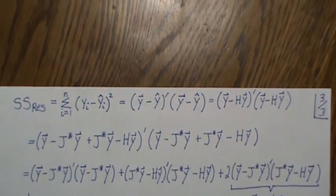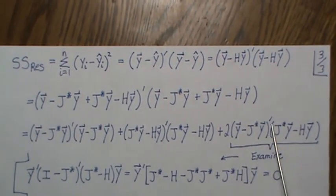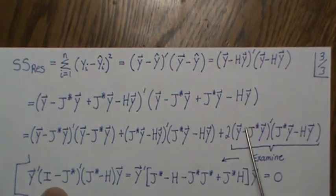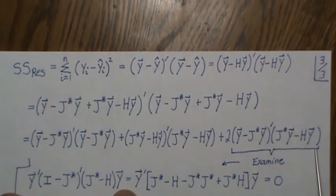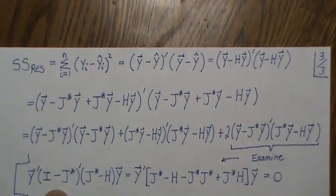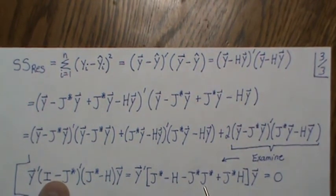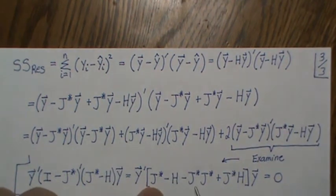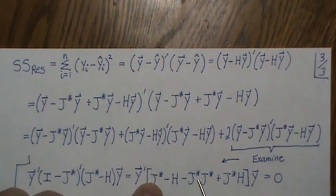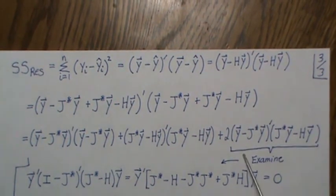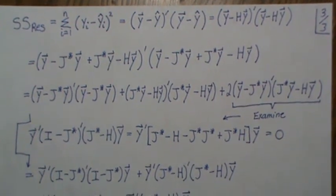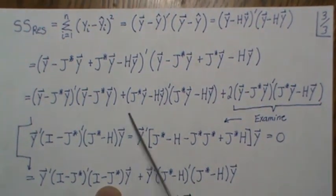Examining the cross product term: factoring out y and taking transposes, we get y^T * (J_star - J_star*H) * (I - J_star) * y, which involves (J_star - J_star^2) and (H - J_star*H). Since J_star is idempotent, J_star^2 = J_star, so J_star - J_star = 0. And since J_star*H = H, we get H - H = 0. The cross product vanishes.